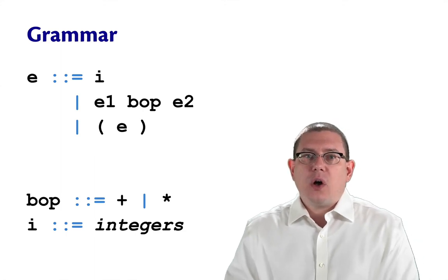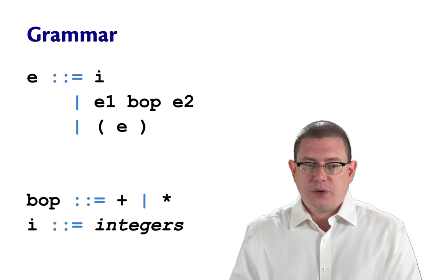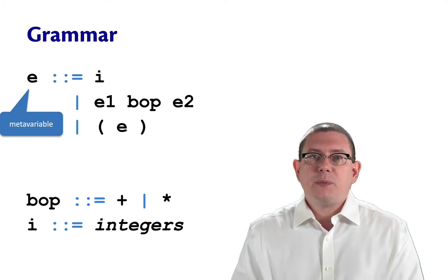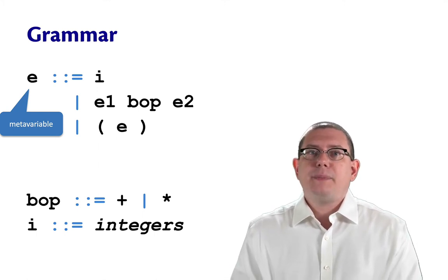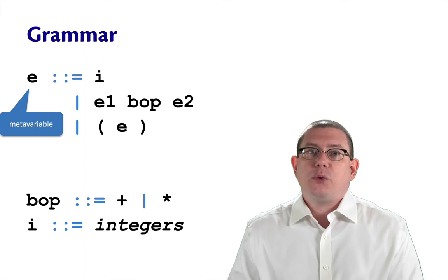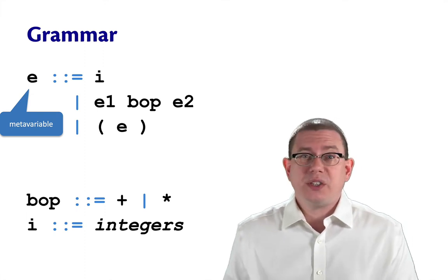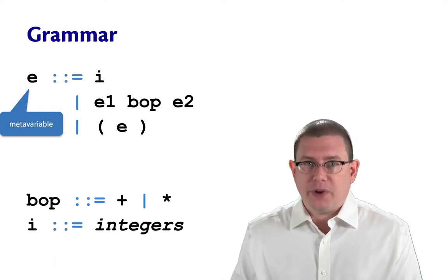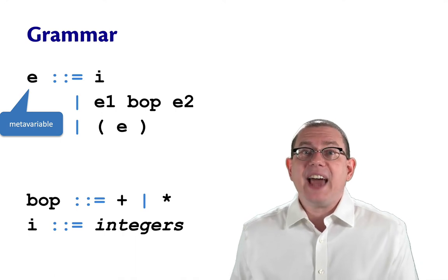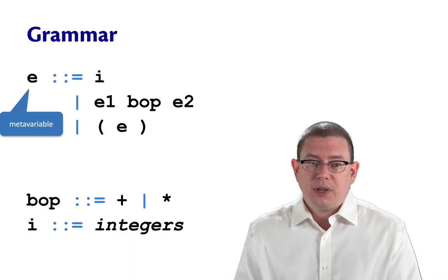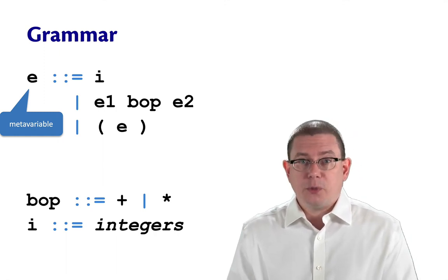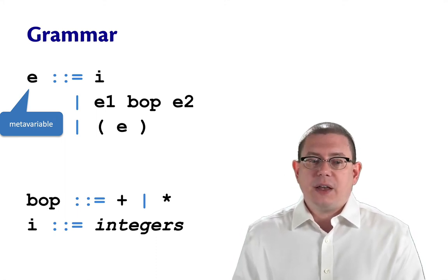We can write down all of this with what's called a grammar for the language. This is a kind of mathematical notation. An expression can be one of three things. So an expression e here is a meta-variable. I'm saying meta-variable to distinguish it potentially from variables in the source of the programming language. A meta-variable here is instead representing pieces of syntax. So e here represents an expression, and it can be either an integer i, or a sub-expression e1 followed by a binary operator followed by a sub-expression e2, or an expression e that is itself in parentheses.